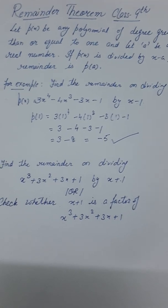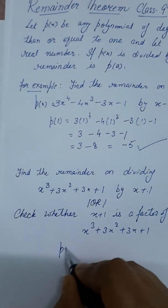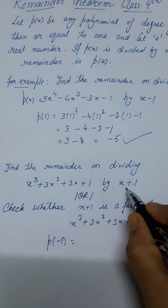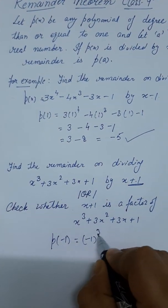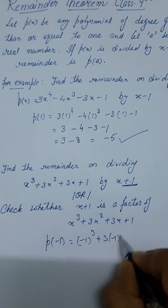If we have positive x plus 1, we will take it negative. If it is negative, we will take it positive. Here we will put p of minus 1, because we have x plus 1, so we will take it negative as minus 1.